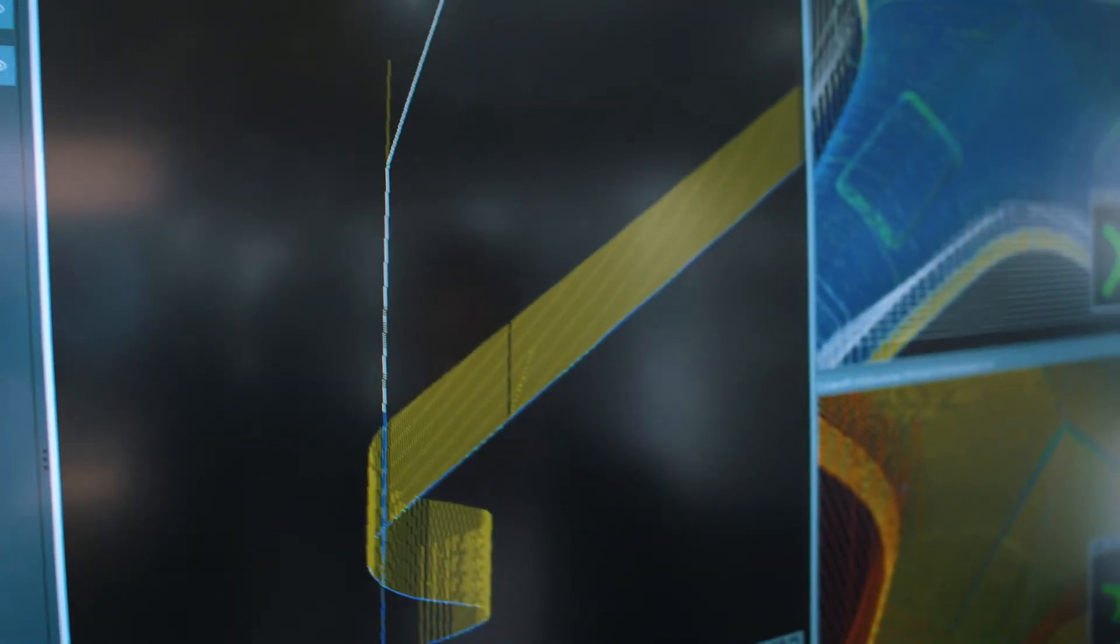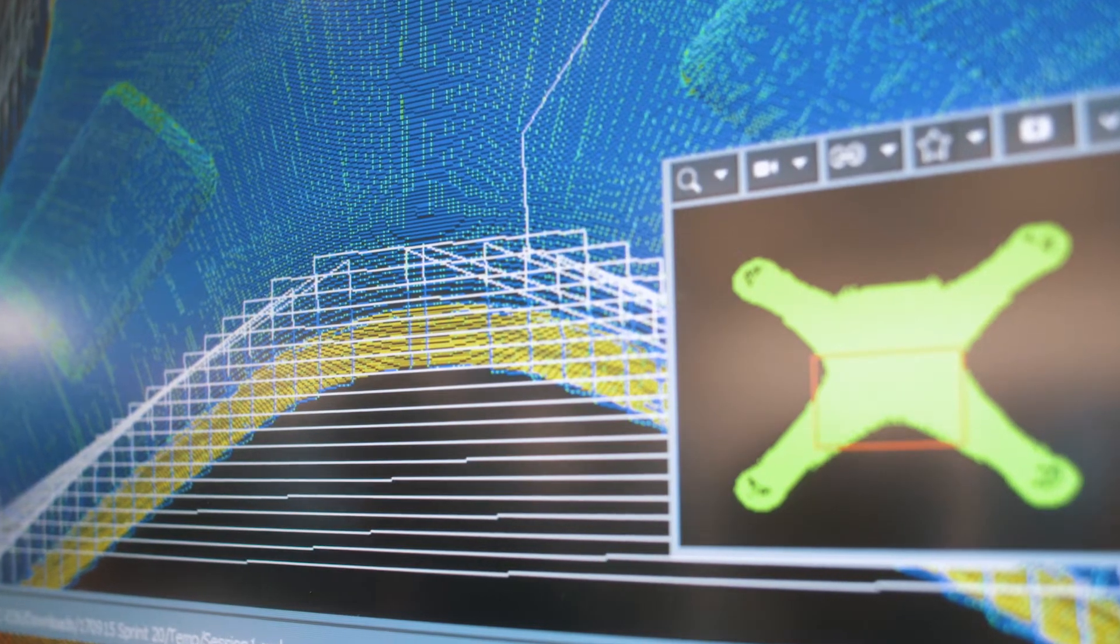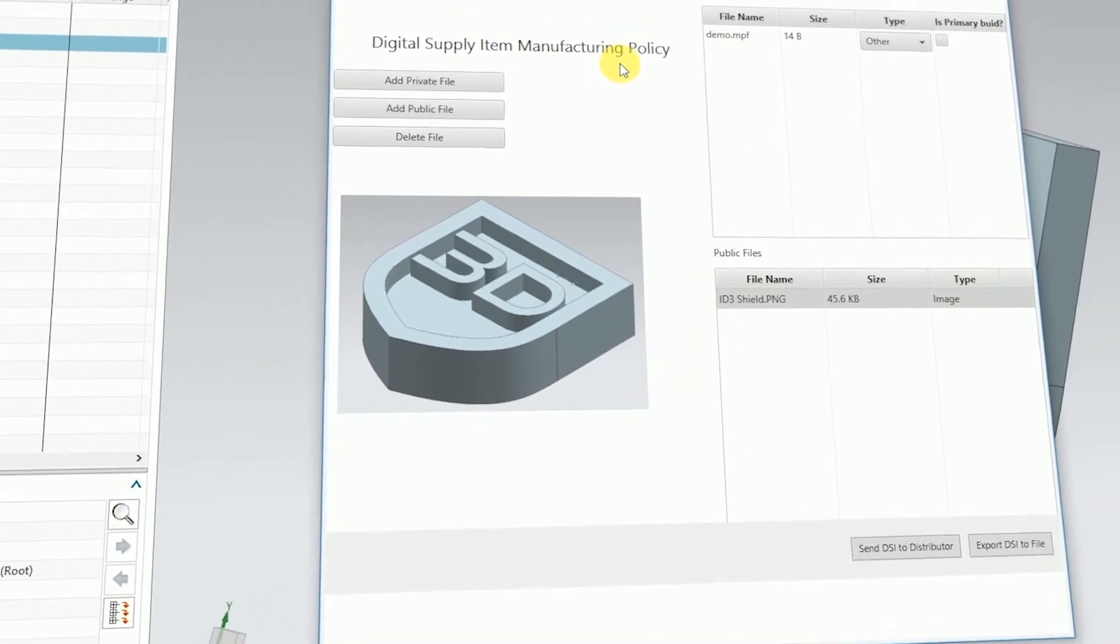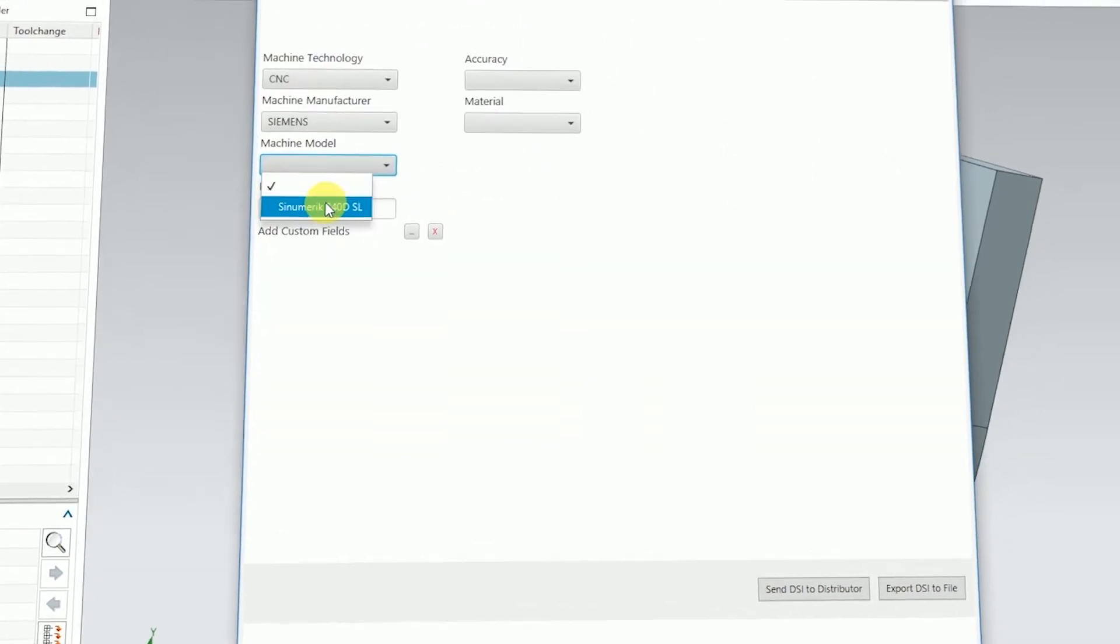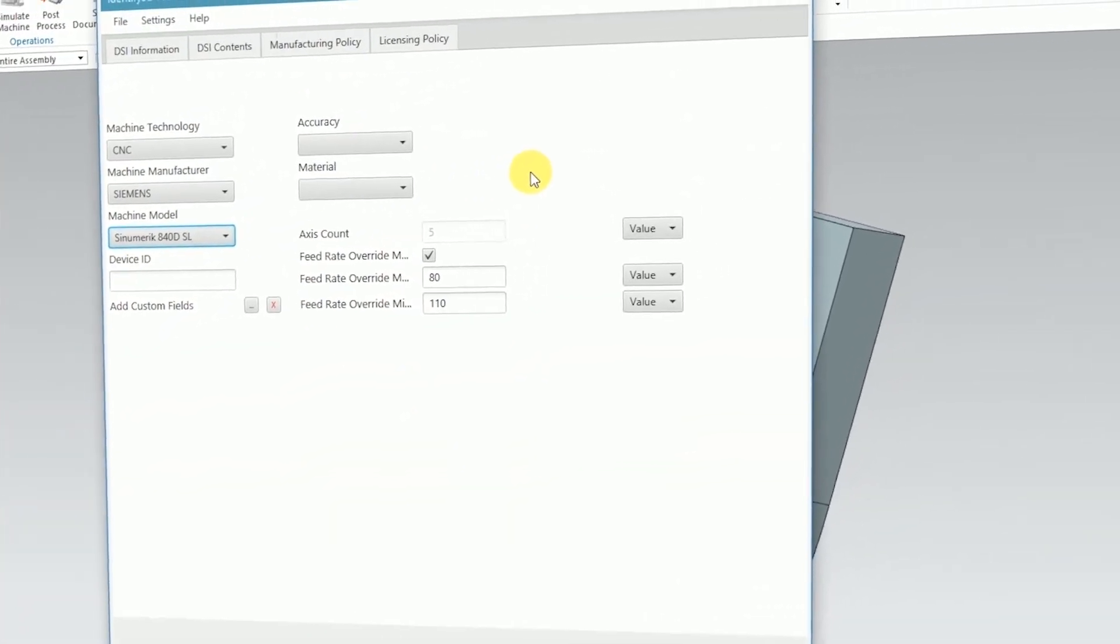Before the NC program is loaded to the machine, it can be checked at the PC using analyze my workpiece tool path. The 3D visualization helps to identify potential for improvement. Protecting intellectual property is of enormous significance, both generally and especially in a digital environment.